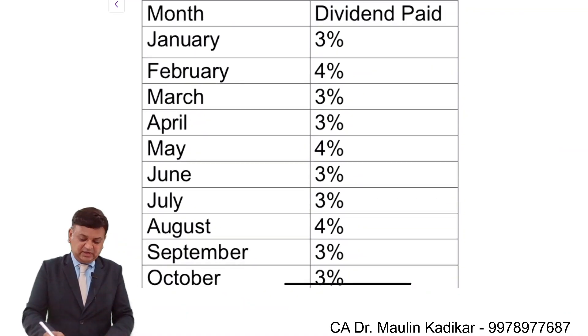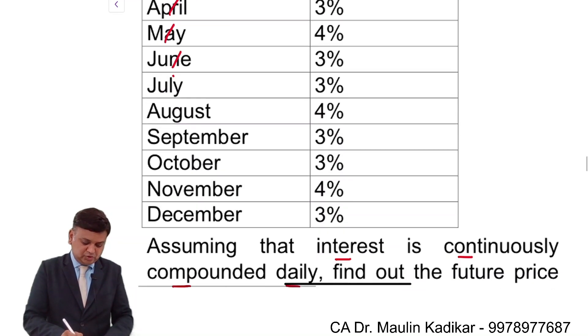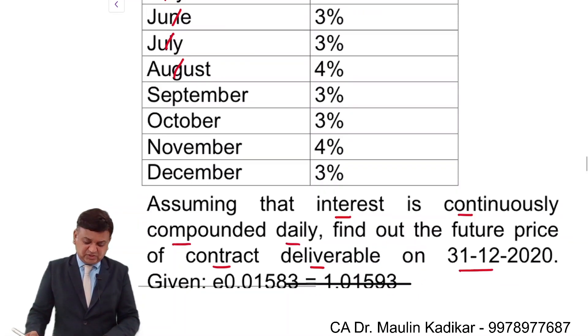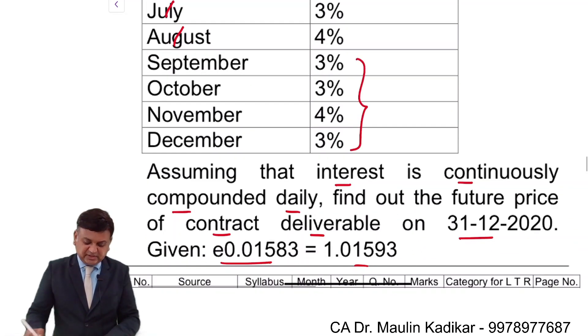We understand that the dividend information provided for January, February, March, April, May, June, July, August - all that information is not going to make any sense to us. This dividend information is going to be useful to us.